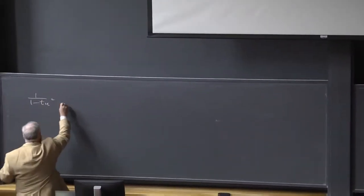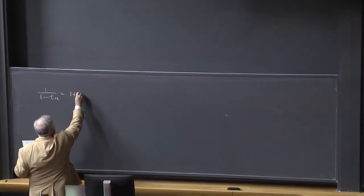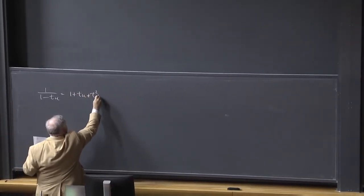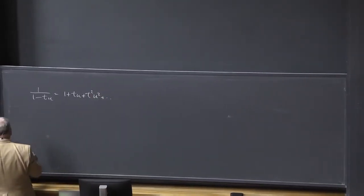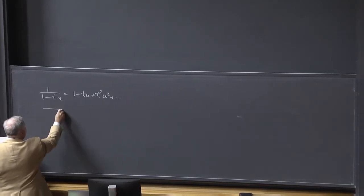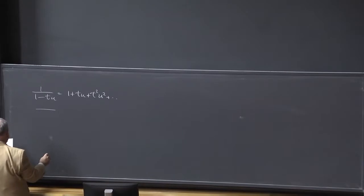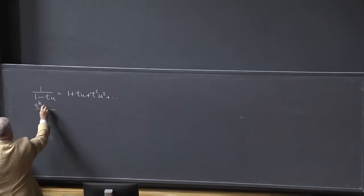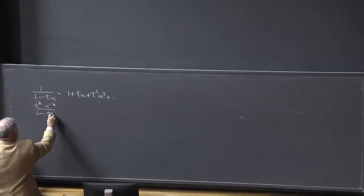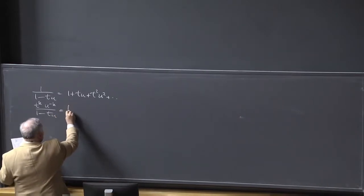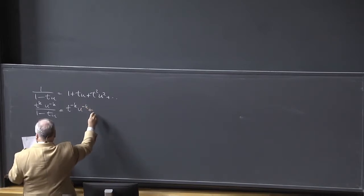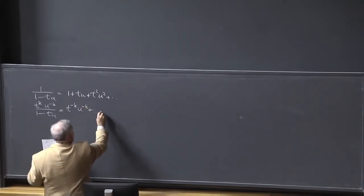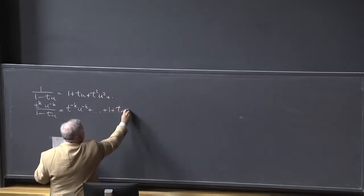Let us concentrate now on the series. So if you have one over one minus TU, this is a series — of course one plus TU — and so on. Now, what about shifting the start? If you get here T to the K, U to the negative K, over one minus TU, this one is T to the negative K, U to the negative K, plus one plus TU, and so on. This way you can start the series earlier.